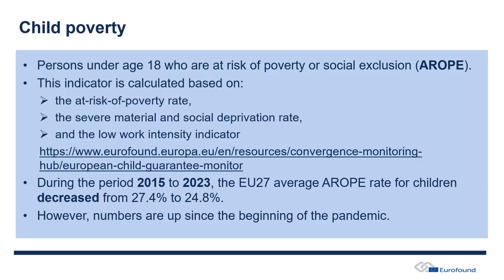Let's look at the latest data for the child poverty indicator. Over the last 10 years — since 2015 — there's been an improvement. The AROPE rate for children has decreased from 27.4% to 24.8% at the EU level. But it's important to look not only at the last 10 years but also at the latest trends — and here we see that numbers are up since the beginning of the pandemic. We are reversing a positive trend.